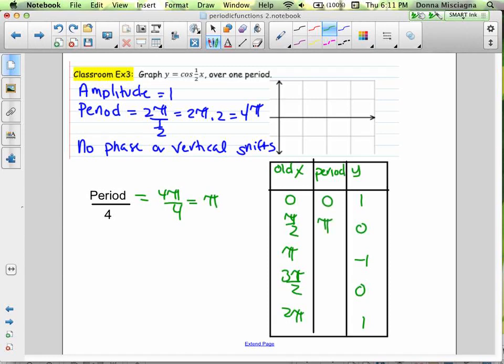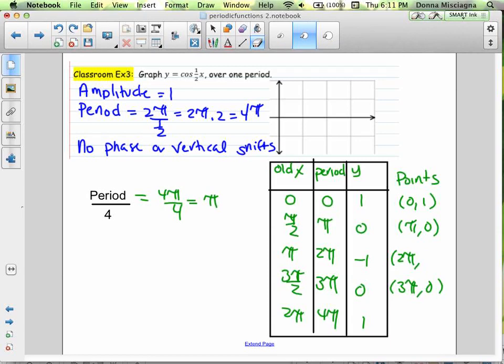So we start at 0, and now we're just going to count by pi, which is pretty easy. Pi, 2pi, 3pi, and 4pi. So our points for our graph are 0, 1; pi, 0; 2pi, negative 1; 3pi, 0; and 4pi, 1. Let's write that nicer.